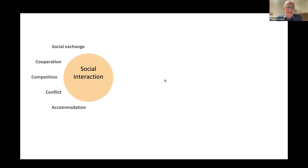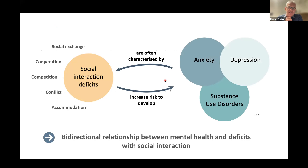When we think about social interaction, many people would converge on the idea that it involves multiple domains — things like social exchange, cooperation behaviors, competition, conflict, and accommodation. It turns out that deficits in one or multiple of those domains accompany multiple mental health disorders such as anxiety, depression, and substance use disorder. At the same time, when people develop such deficits, this can also increase the risk of developing secondary comorbidities. There seems to be a bidirectional relationship between mental health and deficits with social interactions.